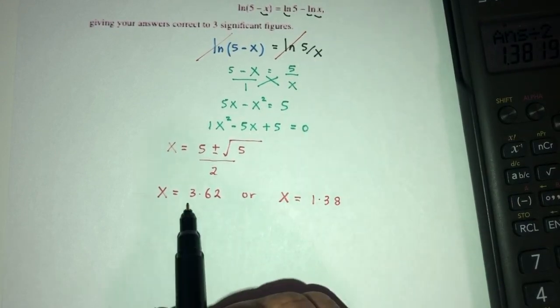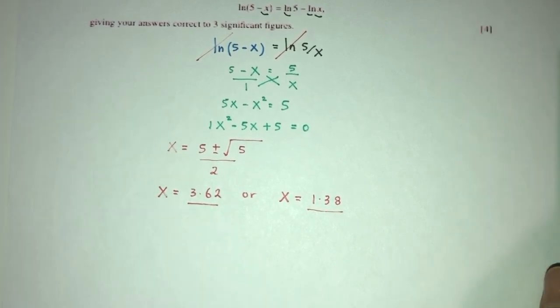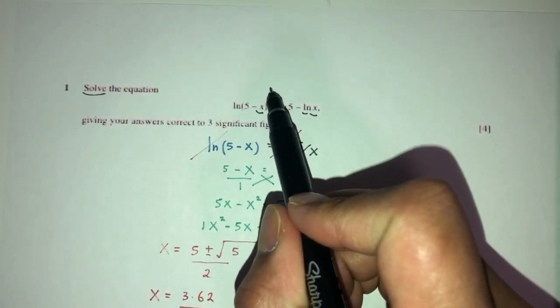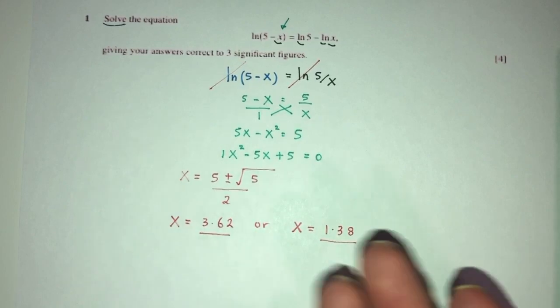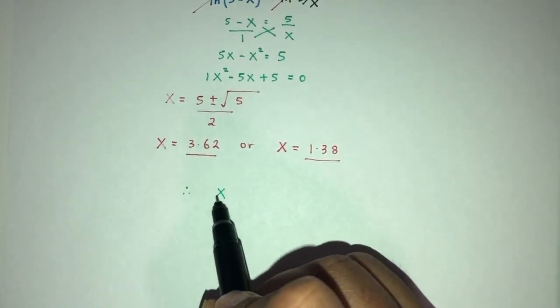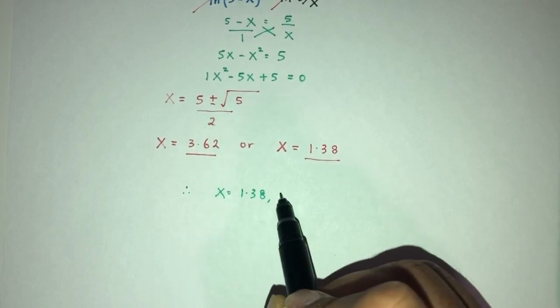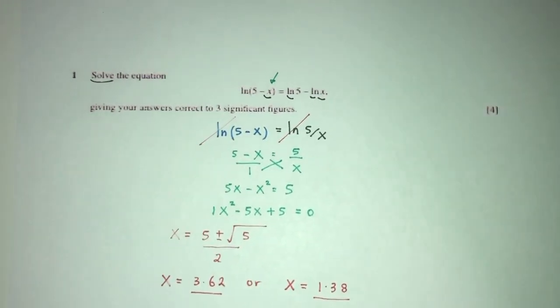Two possible values. Now we always have to double check — if plugging x in makes the argument negative, it won't be valid. But by observation, both 1.38 and 3.62 are less than 5, so both are good. So x has to be 1.38 and 3.62 to 3 significant figures. That is question number 1.